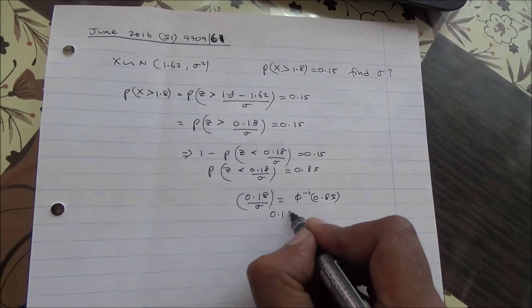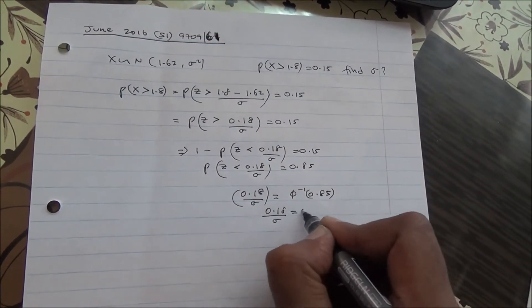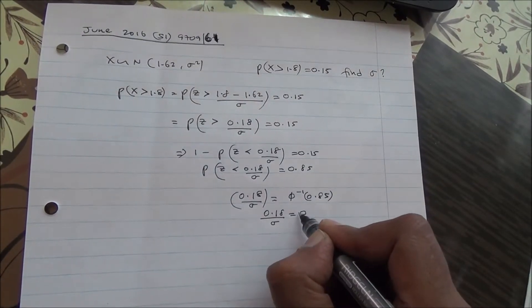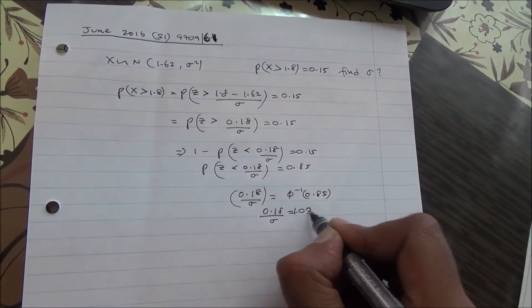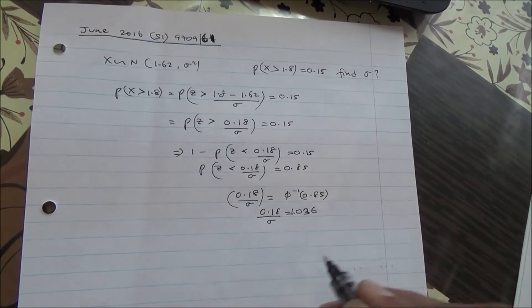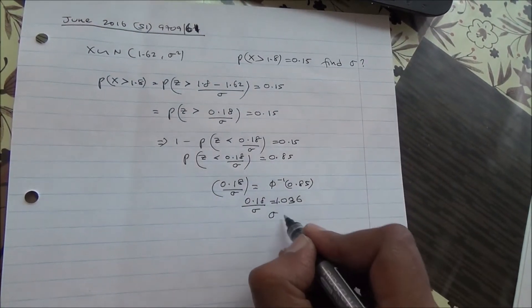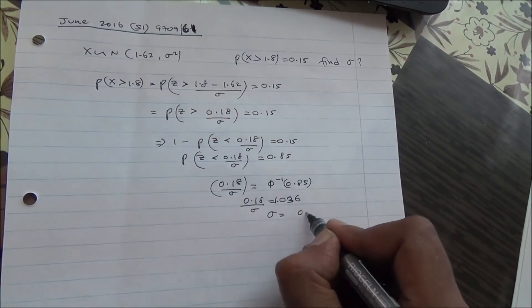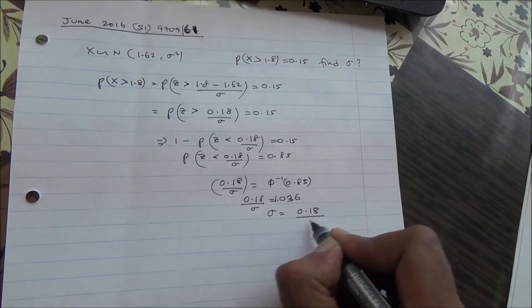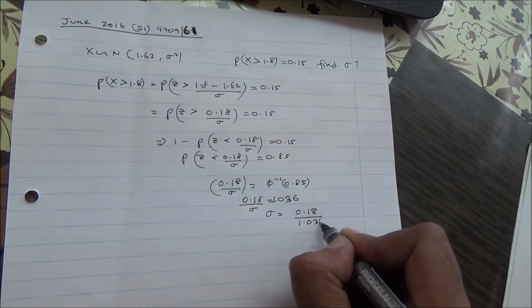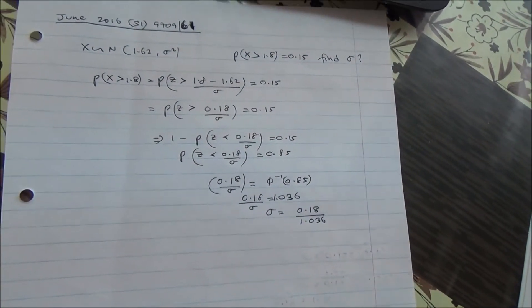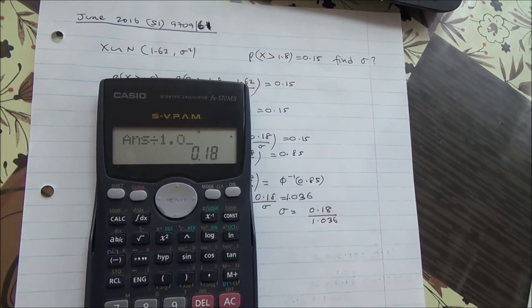So 0.18 is equal to 1.036 times sigma. So sigma is going to be then 0.18 over 1.036.